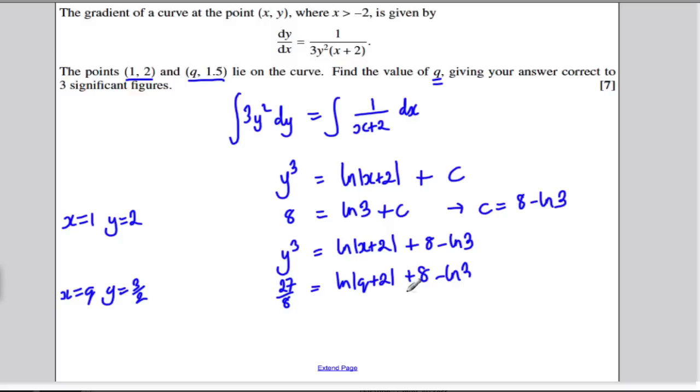So, what I'm going to do now is I'm going to subtract 8 from both sides, and add on ln 3. So, we would get ln of q plus 2 is 27 over 8, subtract 8, and plus ln 3.